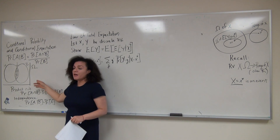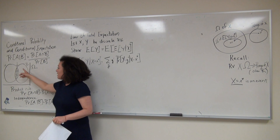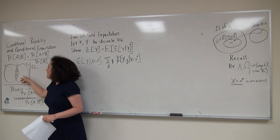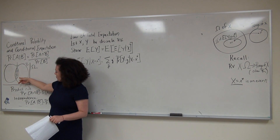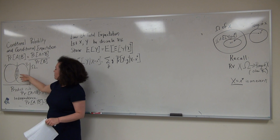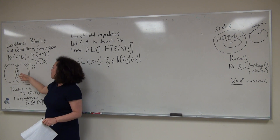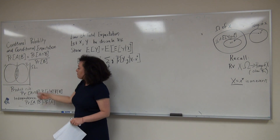I've drawn a Venn diagram of the sample space, so we have event A and event B, and we're concerned with their intersection. We then scale the probability of their intersection by the probability of event B.